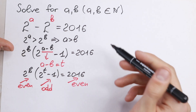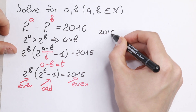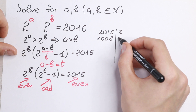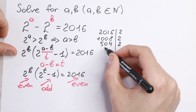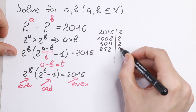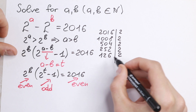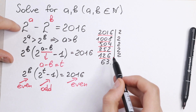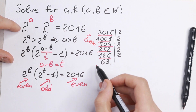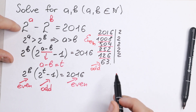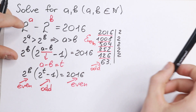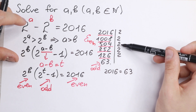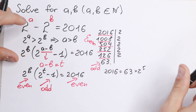Let's write 2016 and see how we can express it. Dividing by 2 gives 1008, dividing again gives 504, then 252, then 126, then 63. All of these intermediate results are even numbers, but the last one, 63, is odd. So we can express 2016 as 63 times 2 to the 5th power.